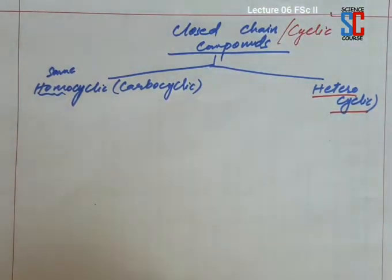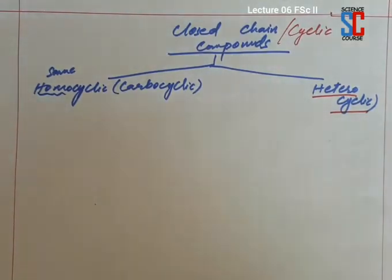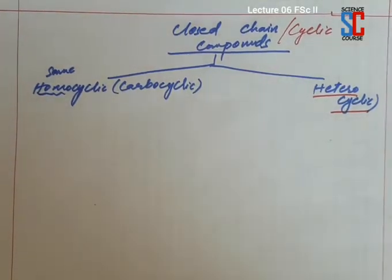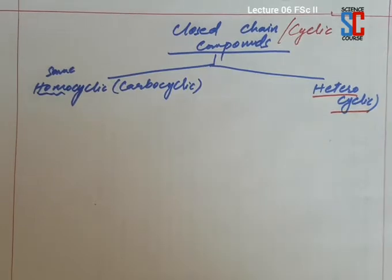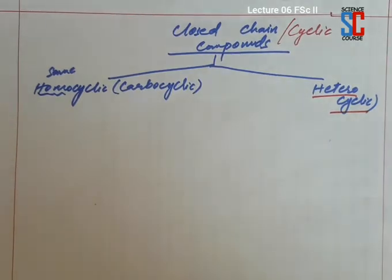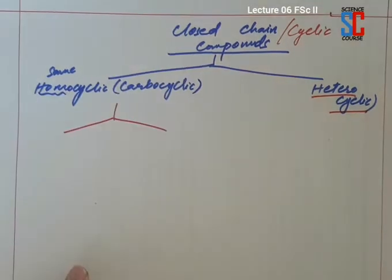Homocyclic are those in which the link consists of same atoms, and these atoms are carbon atoms, so they are also called carbocyclic. Heterocyclic are those compounds in which the link consists of atoms of different elements.